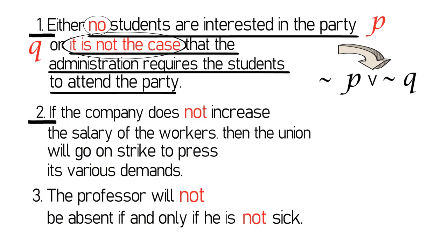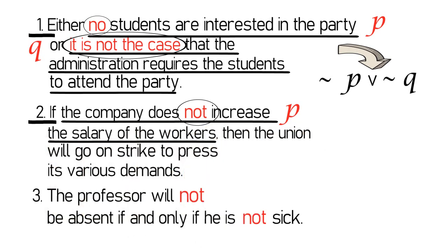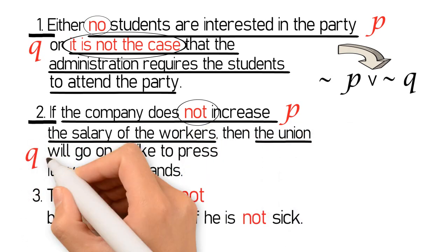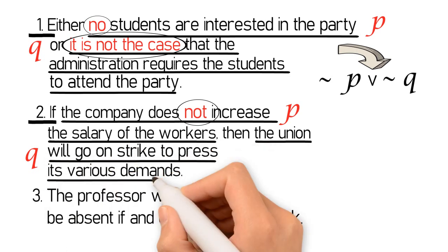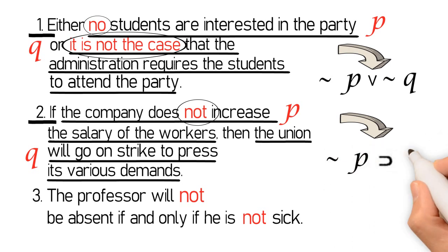In example number 2, however, only the first component statement contains the negation sign NOT. Hence, only the first statement should be negated. Thus, if we let P stand for 'The company does not increase the salary of the workers,' and Q for 'The union will go on strike to press its various demands,' then the statement 'If the company does not increase the salary of the workers, then the union will go on strike to press its various demands' is symbolized as: NOT P, THEN Q.